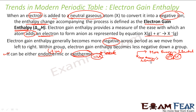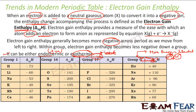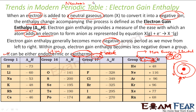Going down a group, less energy is liberated. Why? Because the atomic size increases, and the nucleus does not have sufficient control over the electron. The nucleus is not powerful enough to attract extra electrons because of the greater number of shells and the shielding effect. So as the size increases, the nucleus's capability to attract more electrons decreases, and therefore the energy liberated decreases.